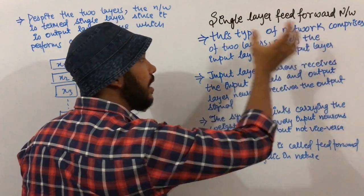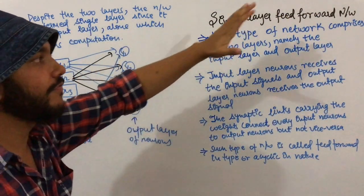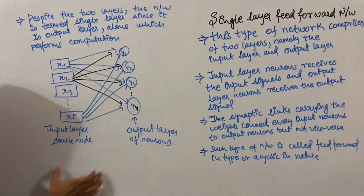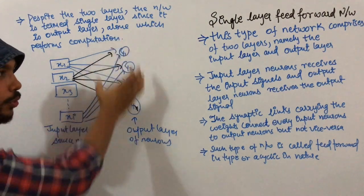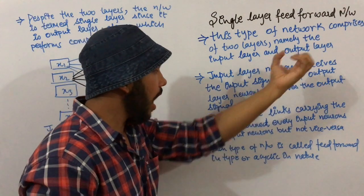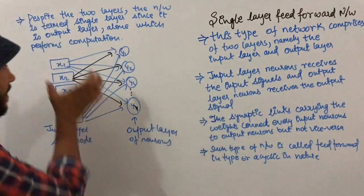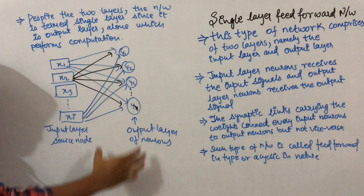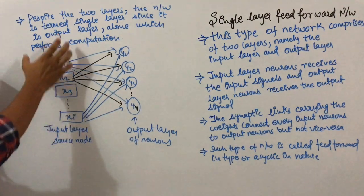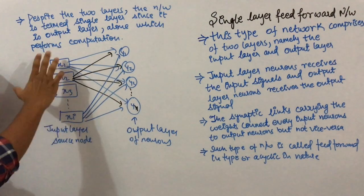This type of network comprises two layers, namely the input layer and the output layer. In a single layer feed forward network, we have two layers: first, the input layer, and second, the output layer. The input layer neurons receive the input signals and the output layer neurons produce the output signals.